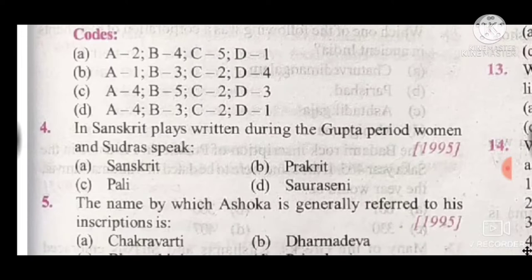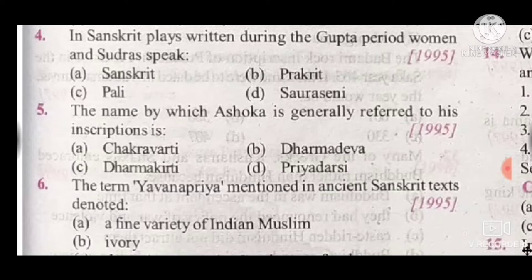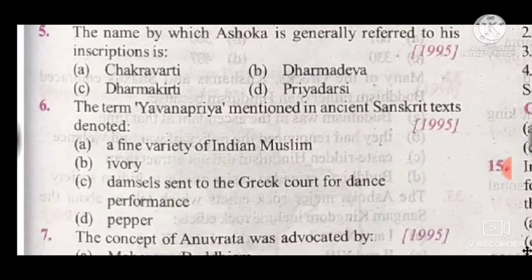Question 5: The name by which Ashoka is generally referred to in his inscriptions is — answer is 'Devanampiya' (Priyadarshi). Question 6: The term 'Yavana Priya' mentioned in ancient Sanskrit texts denoted — answer is 'pepper'; that is the correct answer.